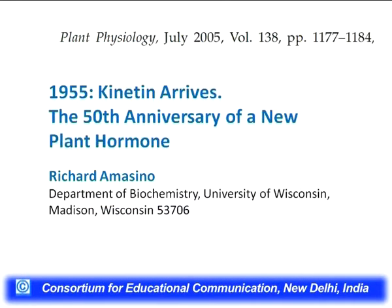This topic was initiated from a journal which appeared in Plant Physiology, July 2005. The title reads '1955: Kinetin Arrives.' It arrives because it is synthetic, and it was published in 2005 — the 50th anniversary of a new plant hormone. It was written by Richard Amasino from the Department of Biochemistry, University of Wisconsin, and beautifully presents how cytokinin was discovered.